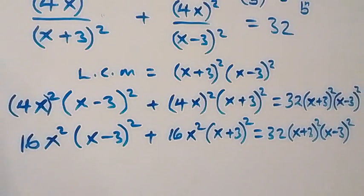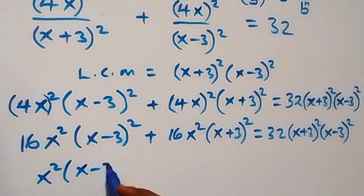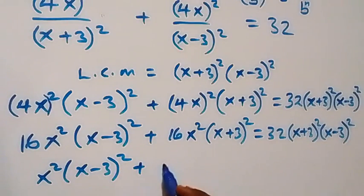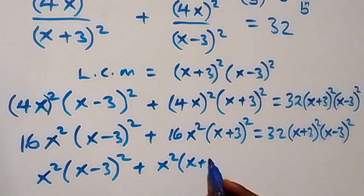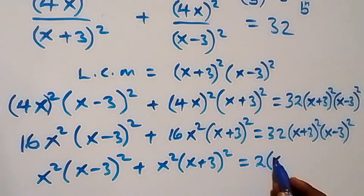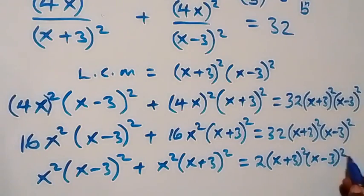We can divide through by 16. This gives x² into bracket (x-3)², plus x² into bracket (x+3)², equals 2 into bracket (x+3)² times (x-3)².